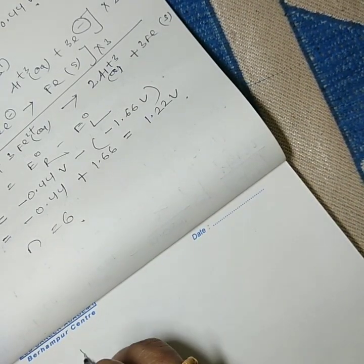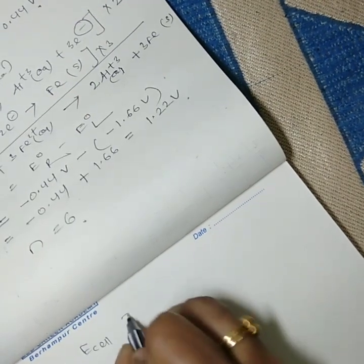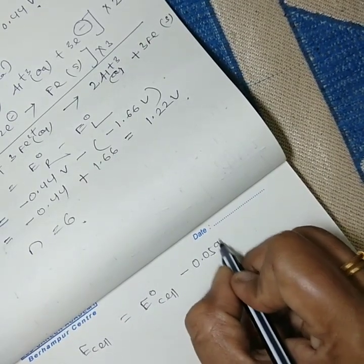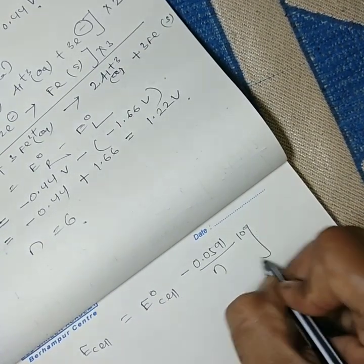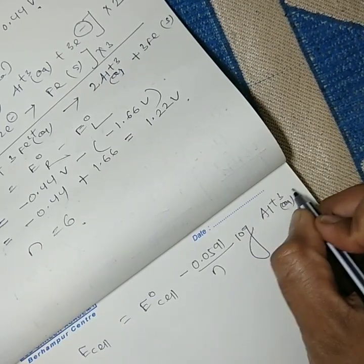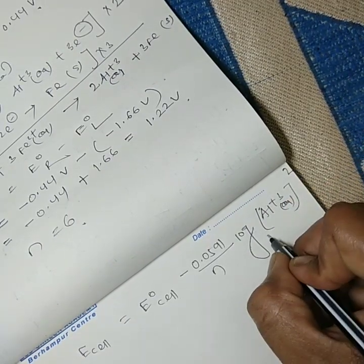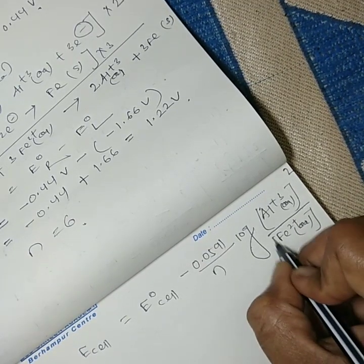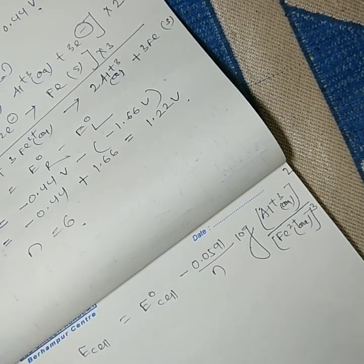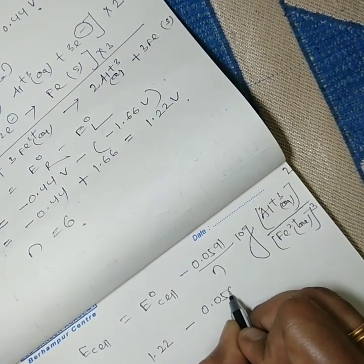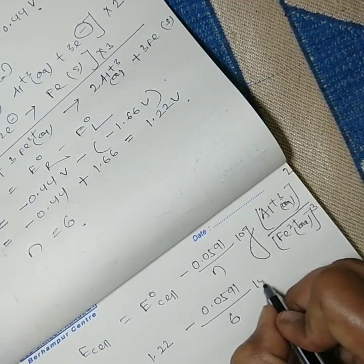Now, E_cell = E°cell − (0.0591/N) × log([Al³⁺]²/[Fe²⁺]³). This implies E_cell = E°cell − (0.0591/6) × log([Al³⁺]²/[Fe²⁺]³). E°cell has been calculated as 1.22 V.